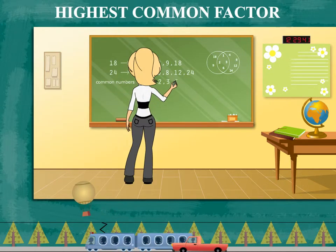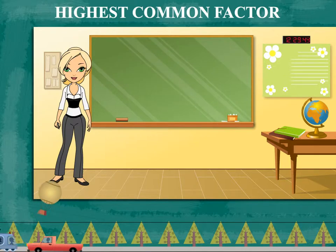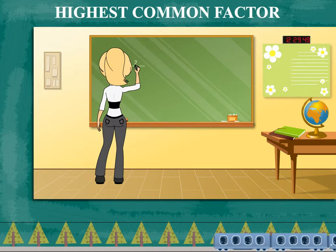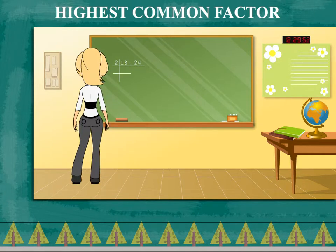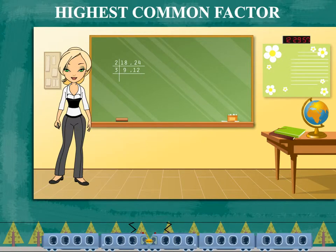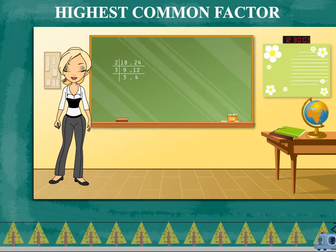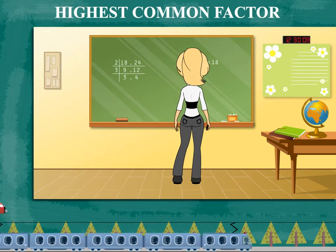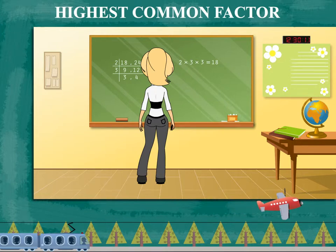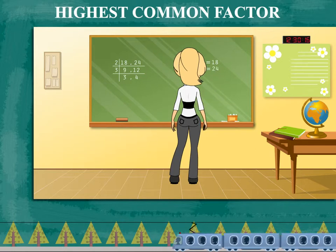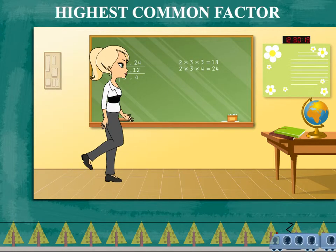So the highest common factor is 6. Teacher Rosy explains further by dividing 18 and 24 by 2 to get 9 and 12. She divides further by 3 to get 3 and 4. Multiplying the common factors, 2 into 3 equals 6. So the highest common factor is 6.